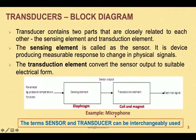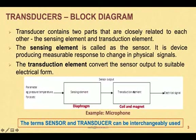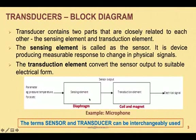Take the case of a microphone, a very common example. In the microphone, the input is sound. We have a diaphragm as the sensing element. The diaphragm produces a vibration that is transferred to a coil and magnet, and that coil and magnet transduces this vibration into electrical signals. So the coil and magnet act as the transducer and the diaphragm acts as the sensor.